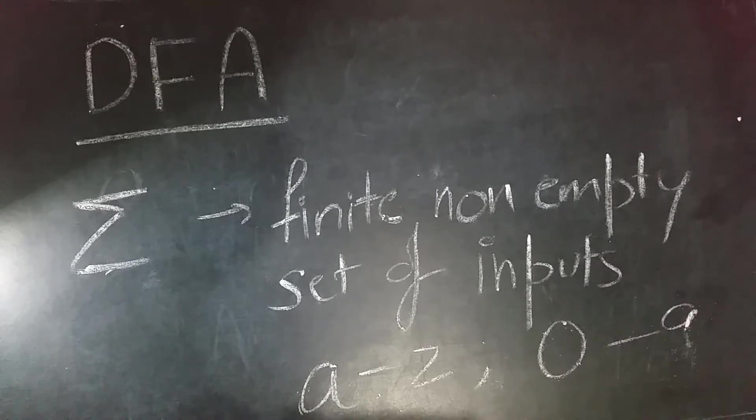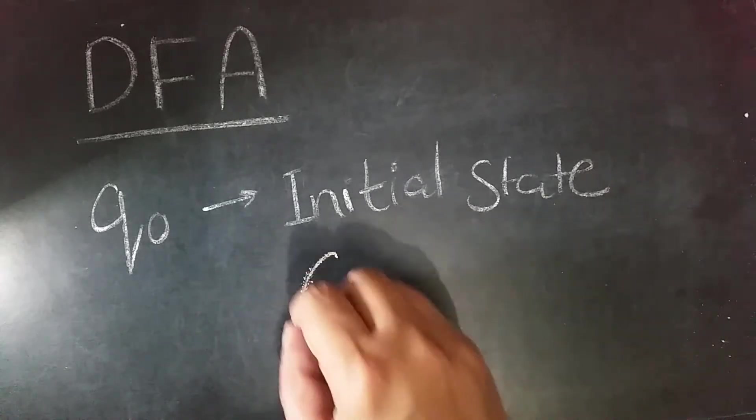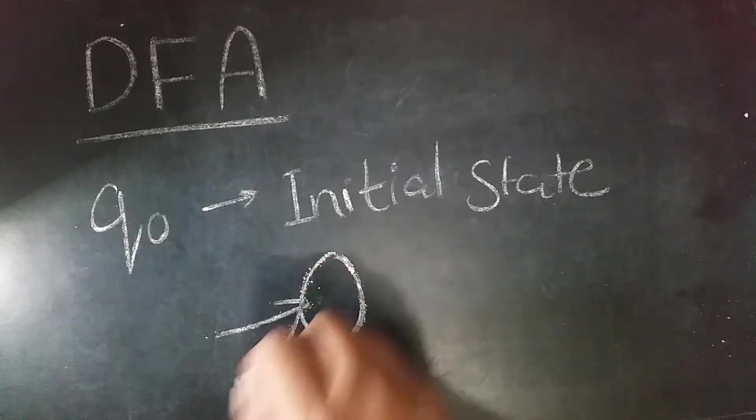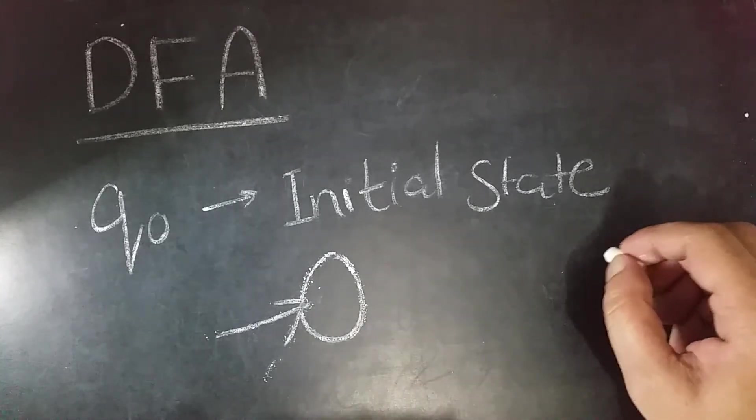0 to 9. The next is Q0, which is the initial state or starting state. In a transition diagram, it is denoted by a circle with an arrow pointing. In a transition table, it is denoted by